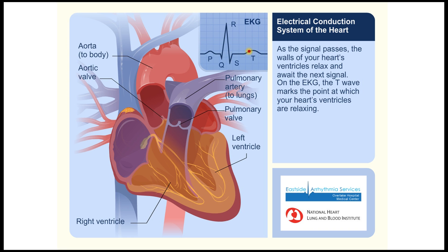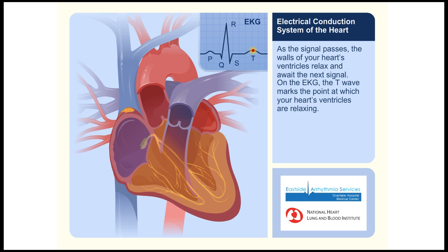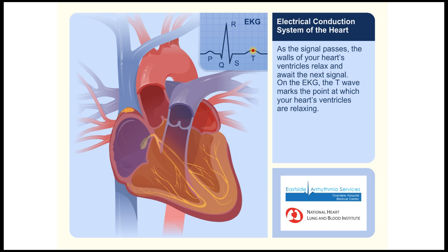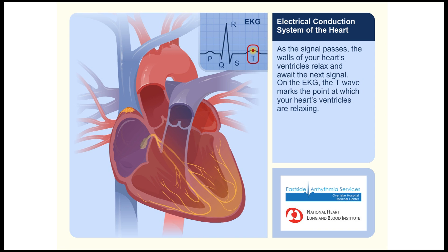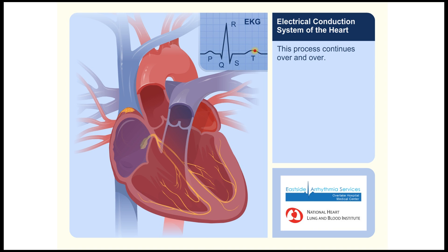As the signal passes, the walls of your heart's ventricles relax and await the next signal. On the EKG, the T wave marks the point at which your heart's ventricles are relaxing. This process continues over and over.